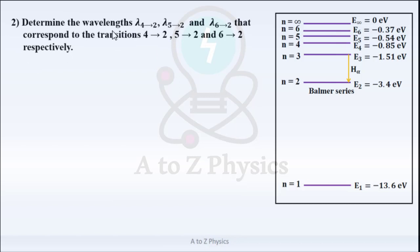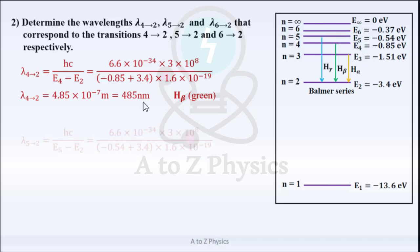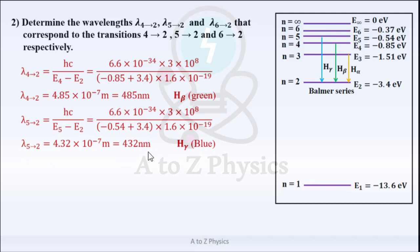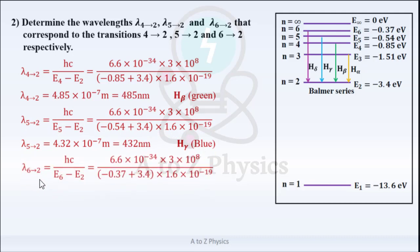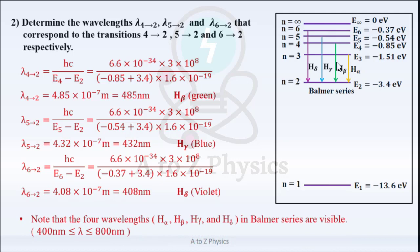Part 2: Determine the wavelengths λ42, λ52, and λ62 corresponding to transitions 4→2, 5→2, and 6→2 respectively. λ42 = Hc/(E4 − E2). Don't forget to convert energies from electron volts into joules. You get λ42 = 485 nm. λ52 = 432 nm. λ62 = 408 nm. Note that these four wavelengths in the Balmer series lie in the visible region, while the others lie in the ultraviolet region.